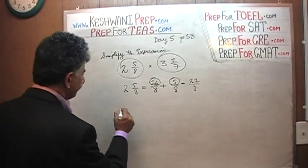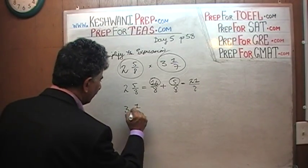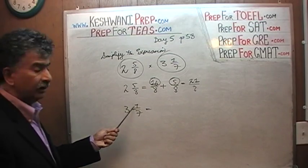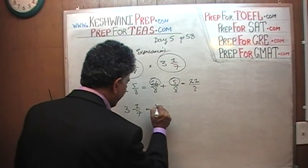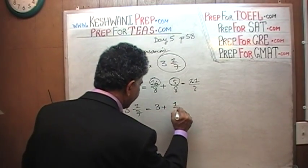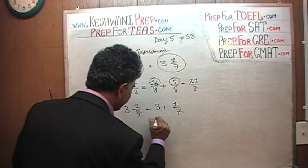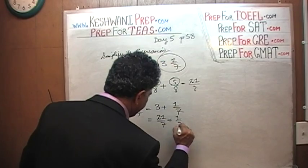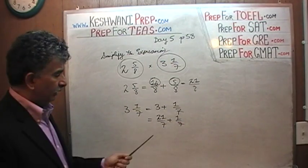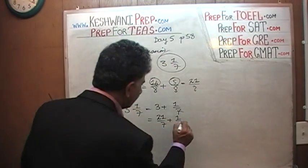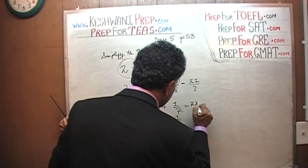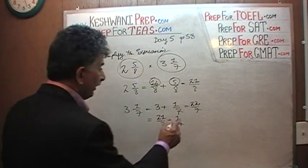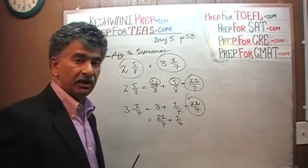Now let's move on to 3 and 1/7. That's simply three times 7 which is 21, plus 1, which is 22 — so 22 over 7. Another way to look at it: three plus 1/7, where three can be expressed as 21 over 7. We now have the same denominator, so 21 plus 1 gives us 22 over 7. We have both parts — all we have to do is multiply them.